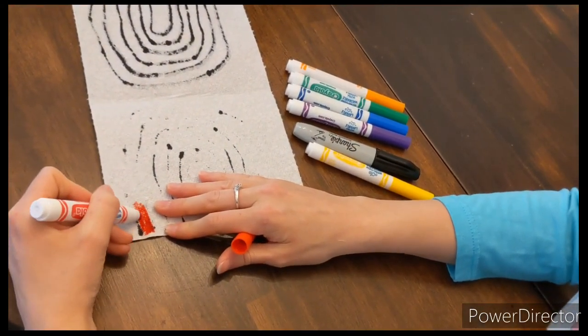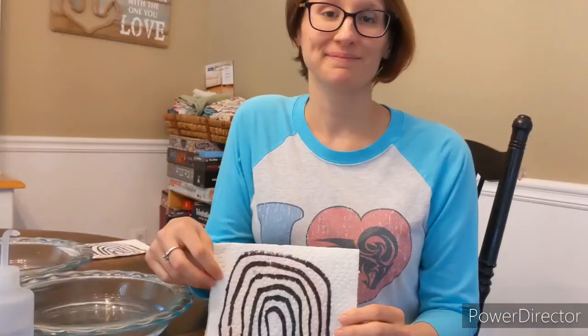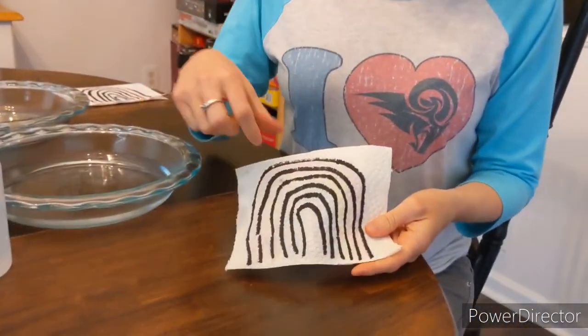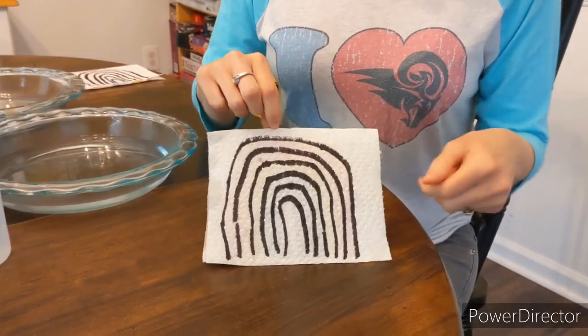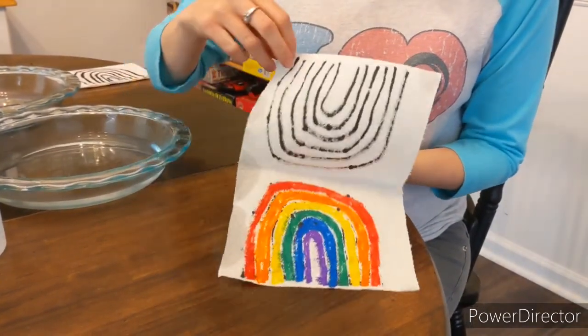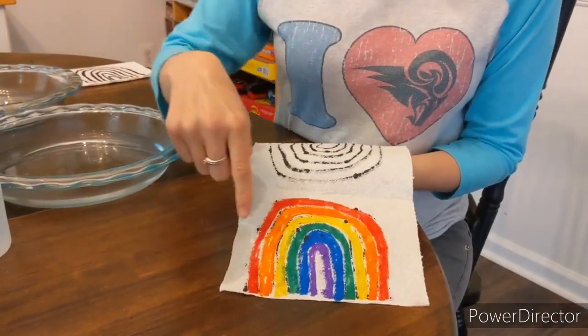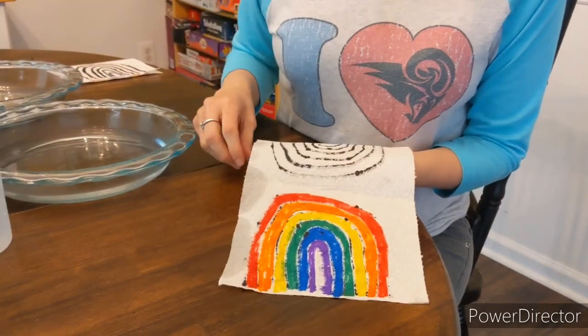Okay friends, as you can see we colored the top part of our paper towel with our black marker and then we went on the inside and we colored it with all our rainbow colors. Now we get to see what happens when we put water on it.